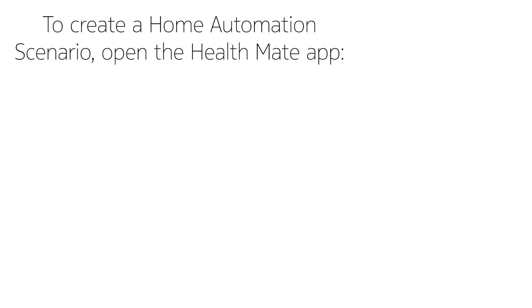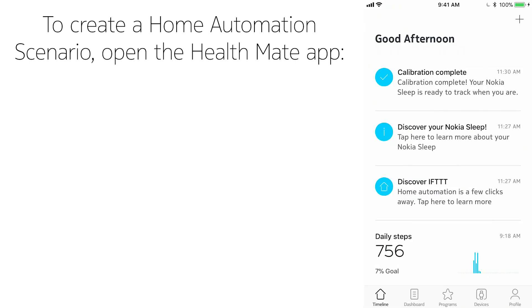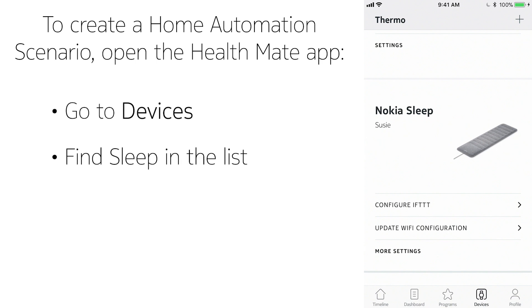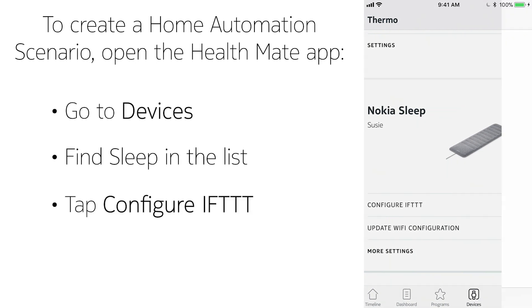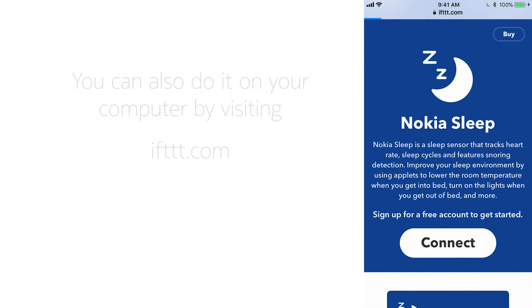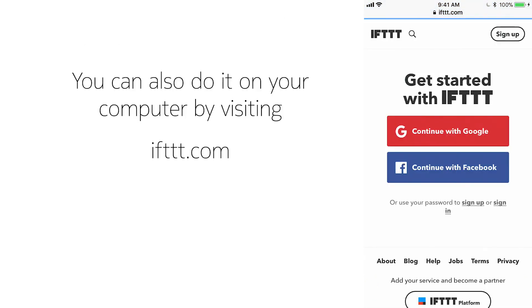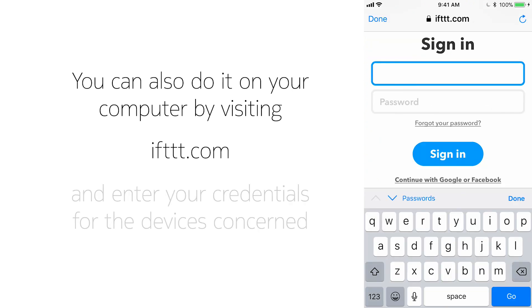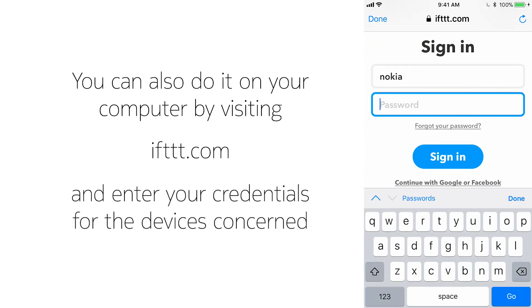To create a home automation scenario, go to HealthMate, Devices, Sleep. Tap Configure IFTTT and then Connect. You can also go to your computer and type ifttt.com. Everything happens online, so you'll probably need to enter your credentials for the devices concerned.